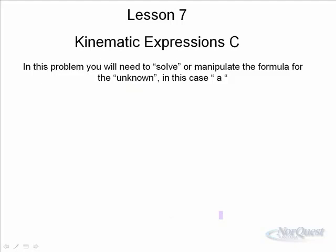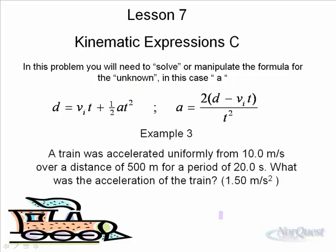Another example: you'll have to solve for a. So this time you do have to manipulate, and here's the problem. A train was accelerated uniformly from 10 meters per second, the initial velocity, over a distance of 500 meters for a period of 20 seconds. What was the acceleration of the train? This one is a little bit of a challenge to manipulate.